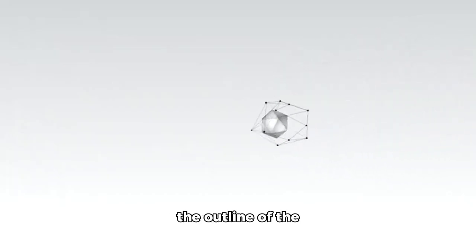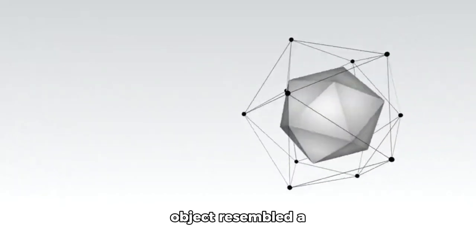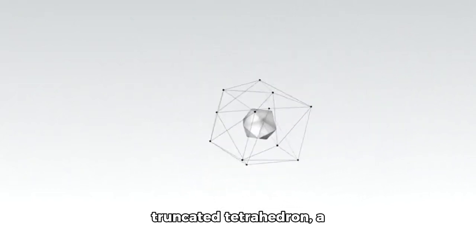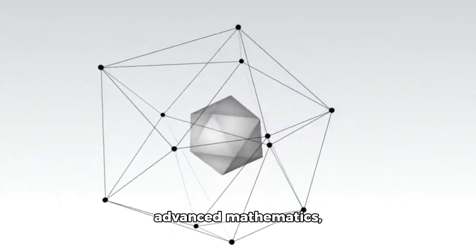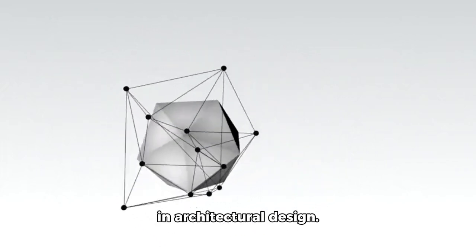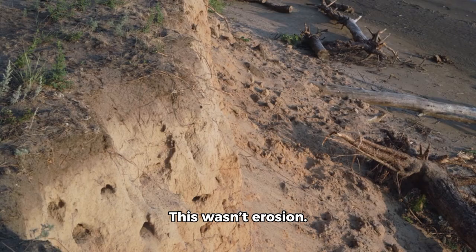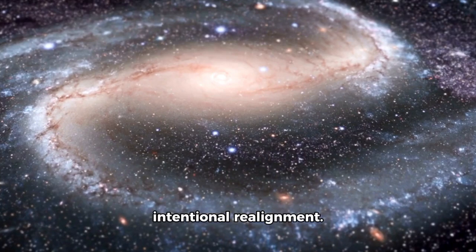Hexagonal panels rotated into perfect alignment. And for a brief moment, the outline of the object resembled a truncated tetrahedron, a geometric shape associated not only with advanced mathematics, but also with stability and architectural design. This wasn't erosion. This was intentional realignment.